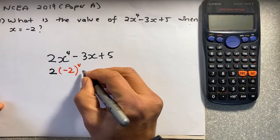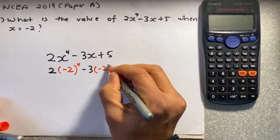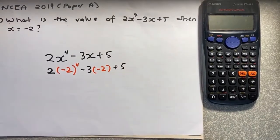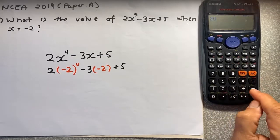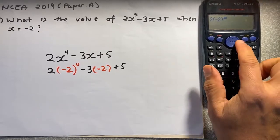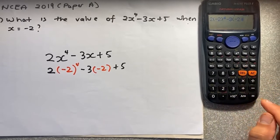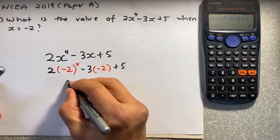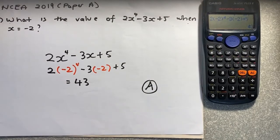So 2 remains, and you're going to replace x with minus 2 — that's to the power of 4. Then you're going to put minus 3, replace x with another minus 2, and the 5 will remain. The last step: put it in your calculator. On the calculator, put 2, bracket, minus 2, close bracket, to the power of 4, minus 3, bracket, negative 2, close bracket, plus 5. The answer is 43, and that will give you an achieve in NCEA Level 1.